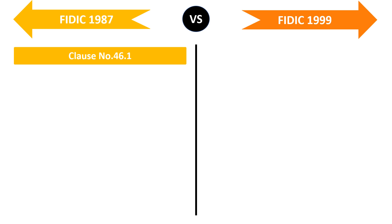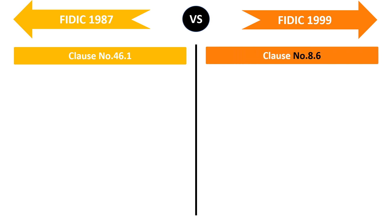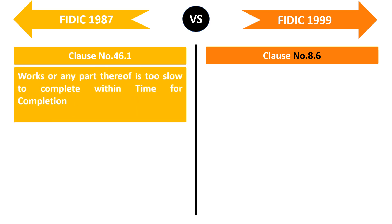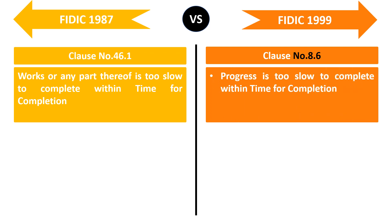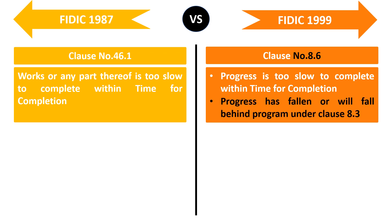In FIDIC 1987 edition, subclause 46.1 deals with rate of progress, whereas in FIDIC 99 edition, subclause 8.6 deals with rate of progress. Subclause 46.1 is triggered when works or any part thereof are too slow to complete within the time for completion. In FIDIC 99 edition, subclause 8.6 is triggered when progress is too slow to complete within the time for completion, and/or progress has fallen or will fall behind the program under subclause 8.3 — an additional condition that has been added.